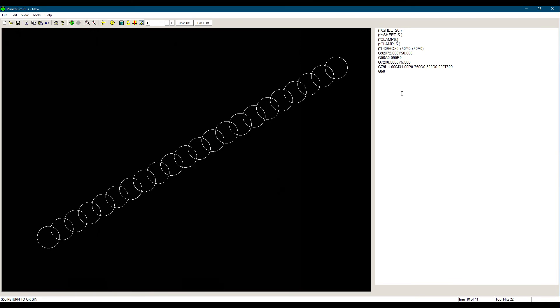As with the G69 code, having a large value for Q will result in less hits and a faster processing time, but the finish quality will suffer, as there will be a big scallop height.